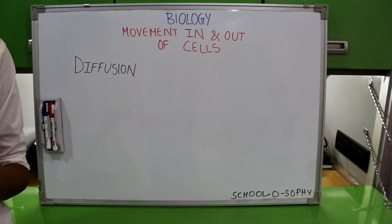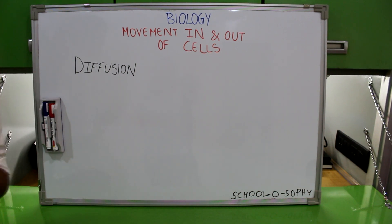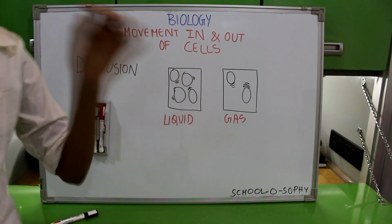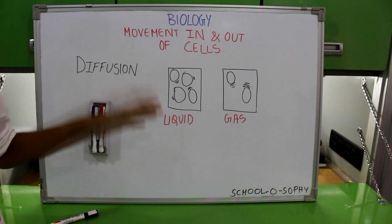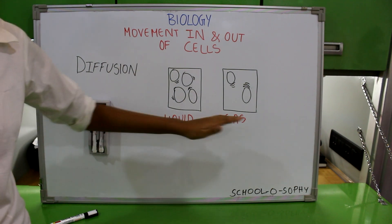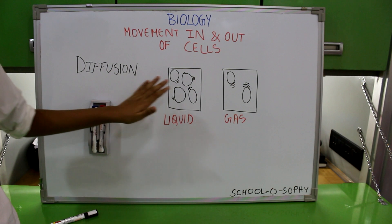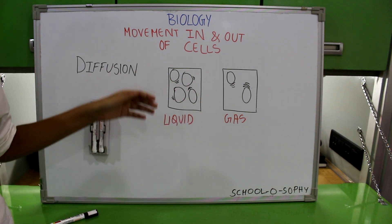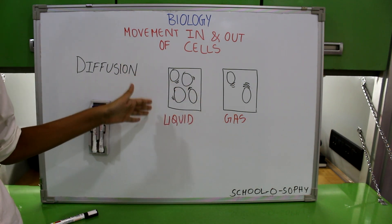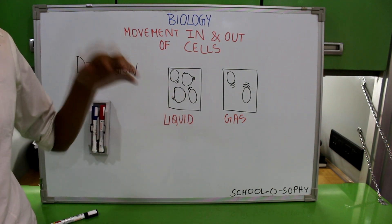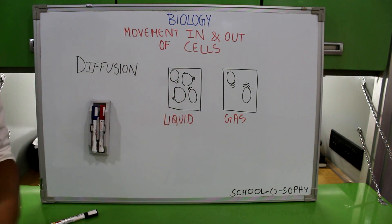I know this sounds confusing, so I am going to explain it in easy words. Diffusion occurs only in liquids and gases. The reason for this is because the attraction forces are weaker in both liquids and gases, and the particles in liquids and gases both have the ability to move around — in liquids because the particles can slide over each other, and in gases because the particles can bounce over each other.